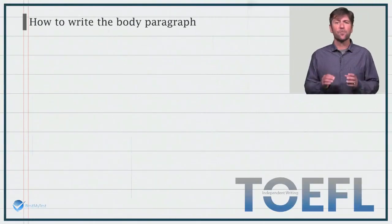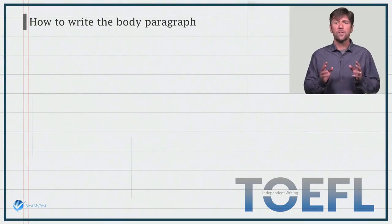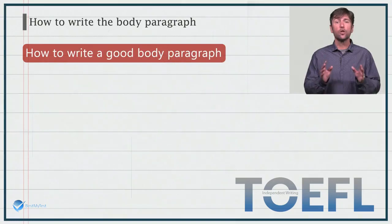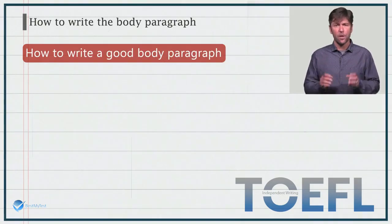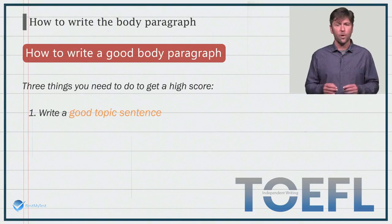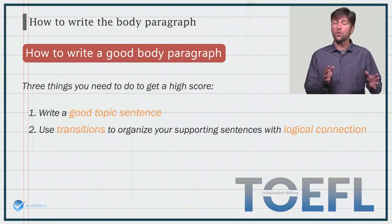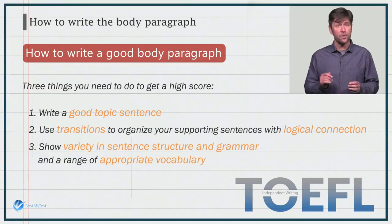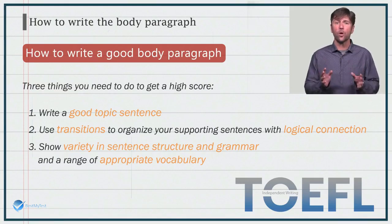That's pretty much it for the structure of a body paragraph, but we're not quite done yet. Now I want to teach you about how to write a good body paragraph. To get a high score, you'll need to write more than the basics. There are three things you need to do to get a high score: write a good topic sentence, use transitions to organize your supporting sentences with logical connections, and show variety in sentence structure and grammar as well as a wide range of appropriate vocabulary.